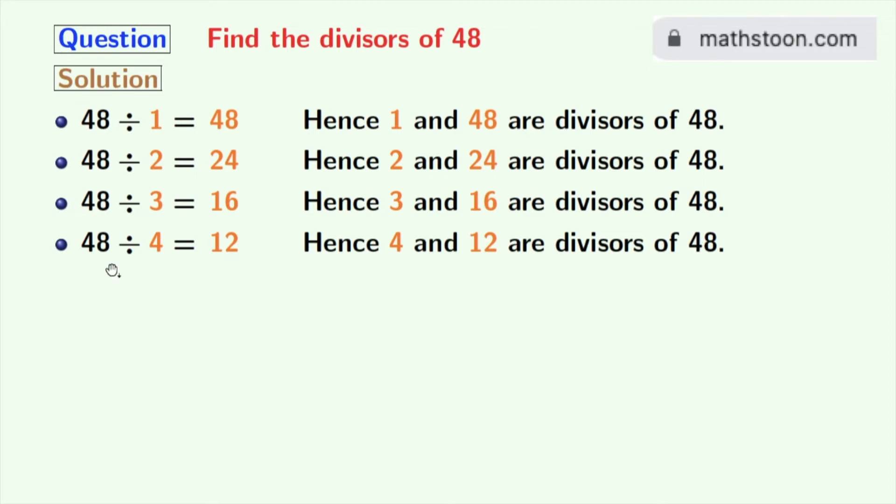Next, number 5 does not divide 48, so we will move to 6. And 48 divided by 6 gives us 8. So, 6 and 8 are the divisors of 48.